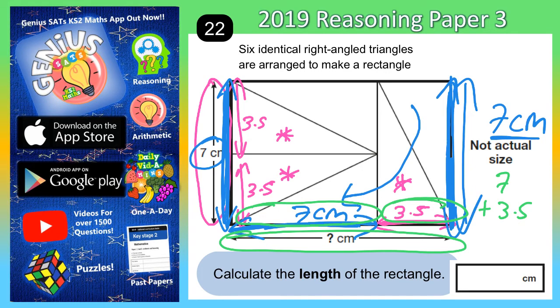Don't forget, 7 is 7.0. So, nothing and 5 is 5. 7 and 3 is 10. Put your decimal point in. Your final answer should be 10.5 centimetres.